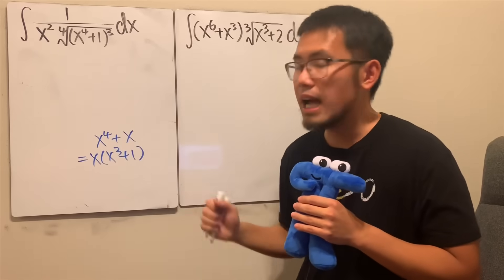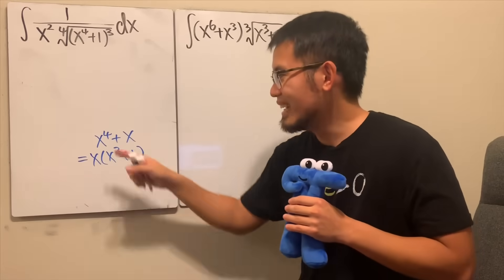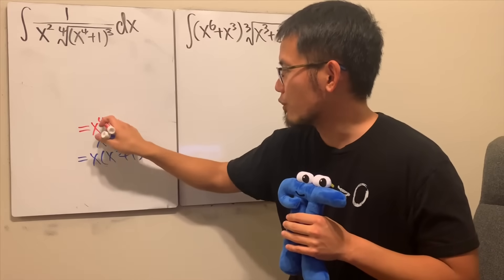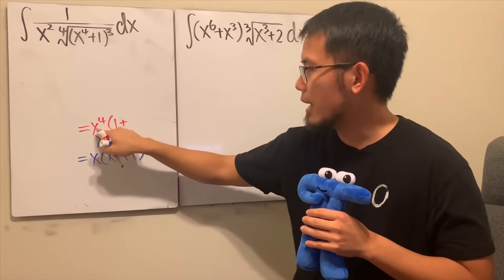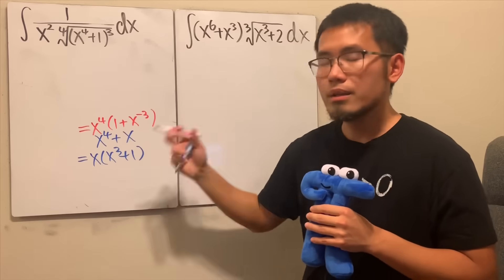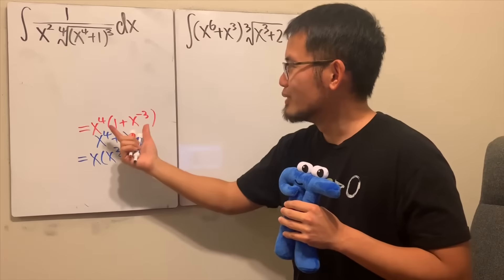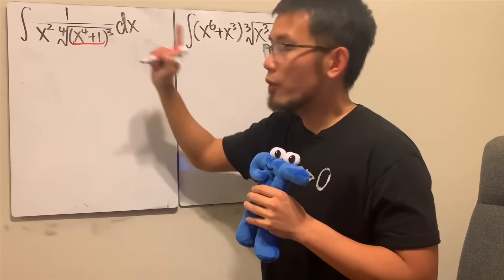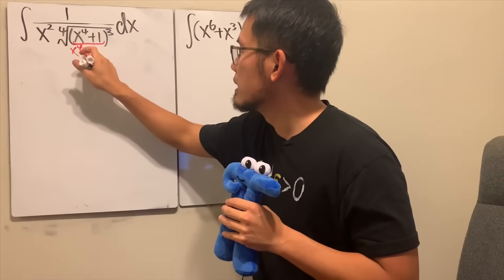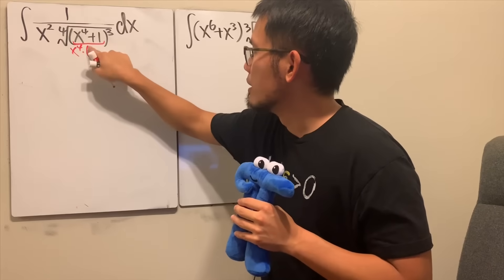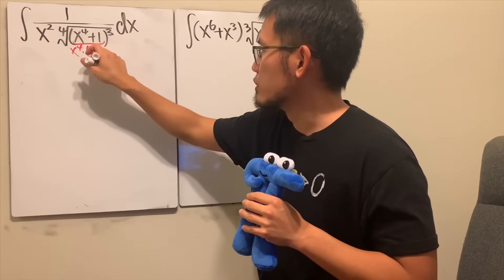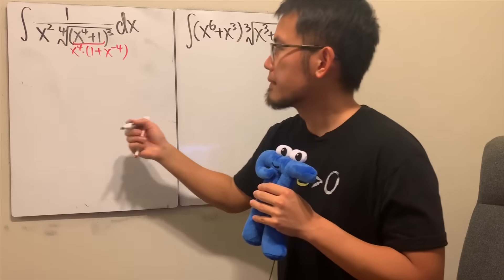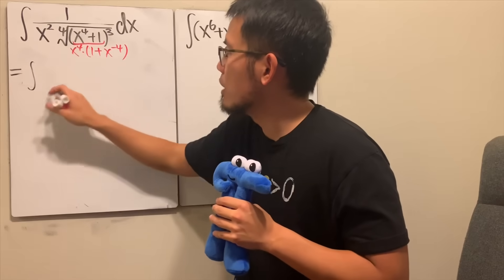We usually factor out x to the smaller power, but can we also factor out x to the bigger power? Yes — it's not usual but it's possible. We can factor out x to the fourth power and it becomes one plus x divided by x to the fourth, which is x to the negative three. That's exactly what we're going to do here. I will factor out x to the fourth, giving us x to the fourth times one plus x to the negative four.